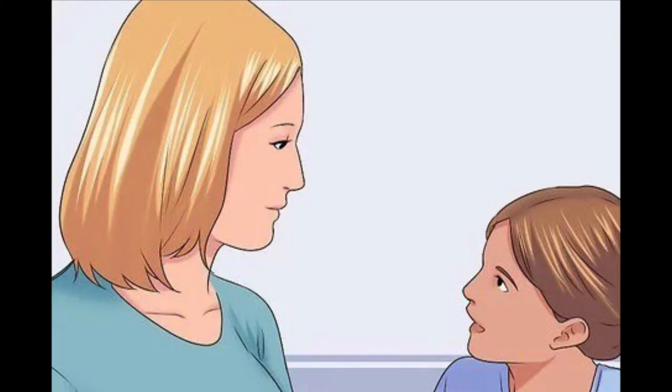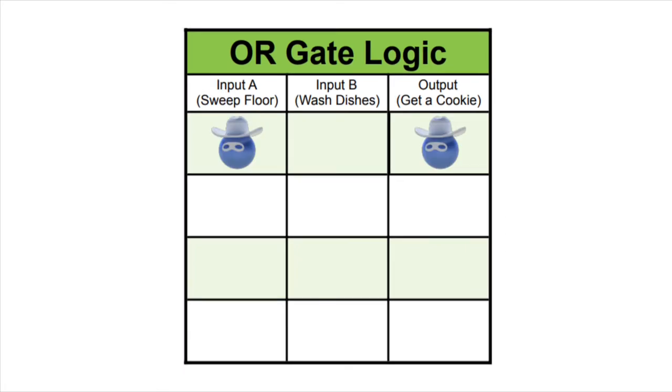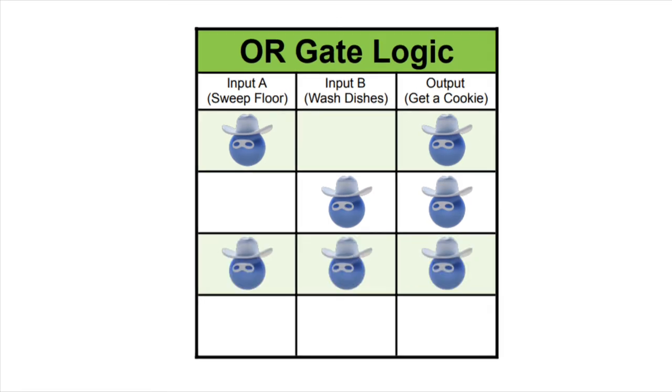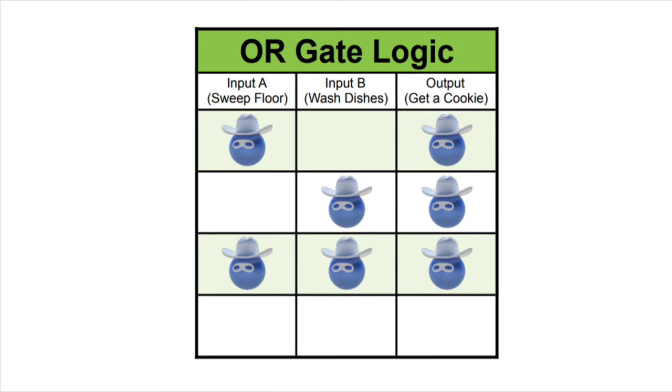Let's review the logic table for the OR gate. We imagined our mom had said we can have a cookie if we swept the floor or washed the dishes. That meant we could have a cookie if we swept the floor. We could also have a cookie if we washed the dishes. We could also have a cookie if we swept the floor and washed the dishes. But if we didn't do either chore, then we couldn't have a cookie. And so the logic table told us that for an OR gate, if either one of the inputs is true, the output is true, or one. If both of the inputs are true, then the output is also true, or one. But if both of the inputs are false, the output is false, or zero.